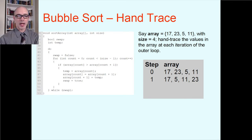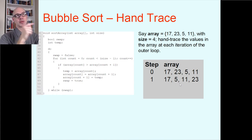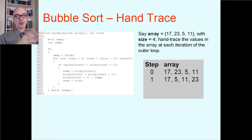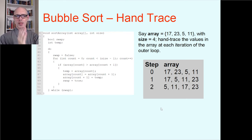Let's try the second pass. Compare 17 and 5 — the 5 is too small, so swap those, giving 5 first and 17 next. Then compare 17 and 11 — that's out of order, so swap, putting 11 in the second position and 17 in the third. Then compare 17 and 23 — that's fine, 17 is less than 23. At the end of the second iteration the array is 5, 11, 17, 23.